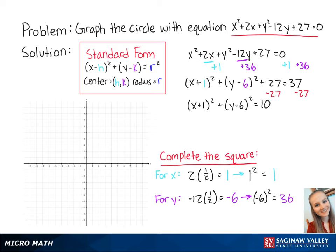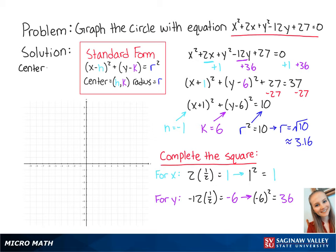Now that the equation is in standard form, we know that h is equal to negative 1, k is equal to 6, and r squared is equal to 10. This means that r is equal to the square root of 10, which is about 3.16. Now we know that the center is at negative 1, 6, and that the radius is equal to the square root of 10.